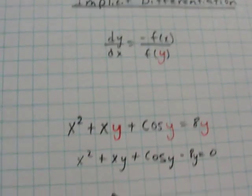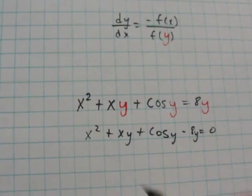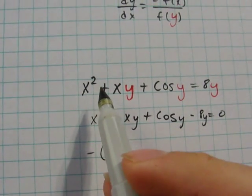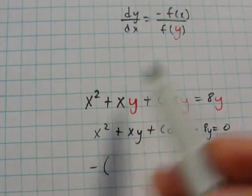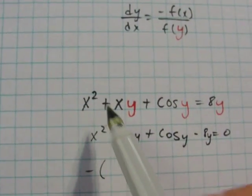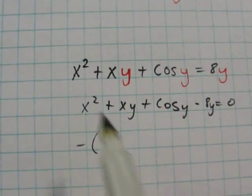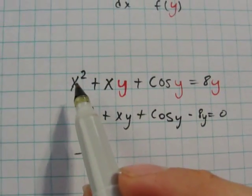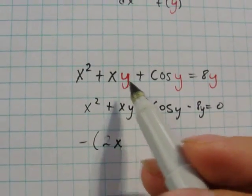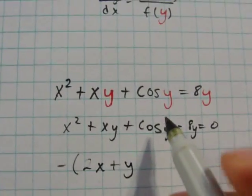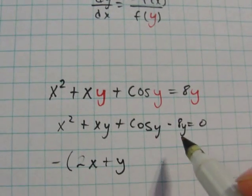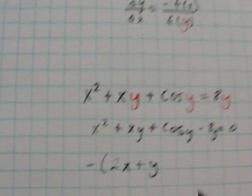So using the formula — for the top, anywhere there's an x you take the derivative of that x; if there's a y you completely ignore it until you get to the bottom which is f of y. So there's an x here so I take the derivative of x squared which is 2x. There's an x here so I take the derivative of xy which is just y. Then cosine y has no x so that's ignored. Negative 8y has no x so that's ignored. Zero has no x so that's ignored — you're done with the top part.